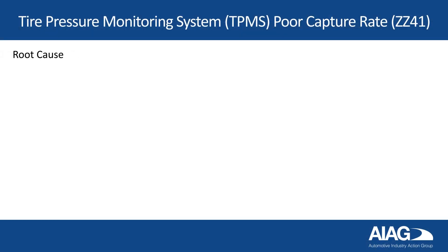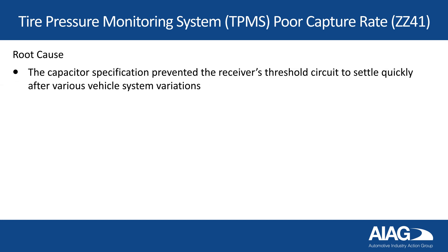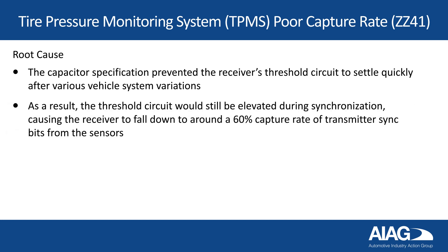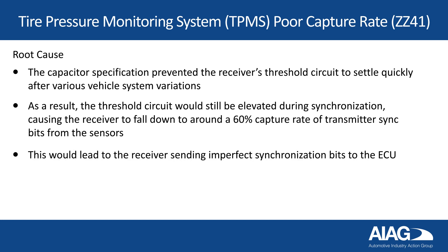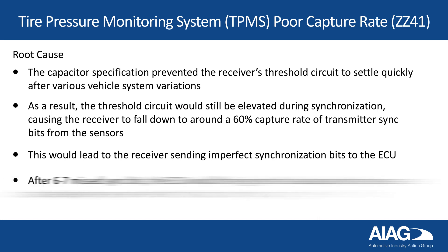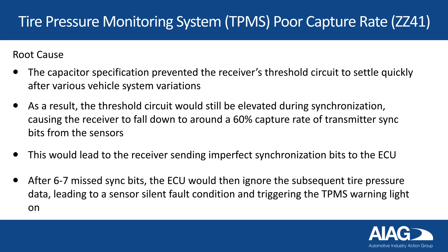Root Cause: The capacitor specification prevented the receiver's threshold circuit from settling quickly after various vehicle system variations. As a result, the threshold circuit would still be elevated during synchronization, causing the receiver to fall down to around a 60% capture rate of transmitter sync bits from the sensors. This would lead to the receiver sending imperfect synchronization bits to the ECU. After six to seven missed sync bits, the ECU would then ignore the subsequent tire pressure data, leading to a sensor silent fault condition and triggering the TPMS warning light on.